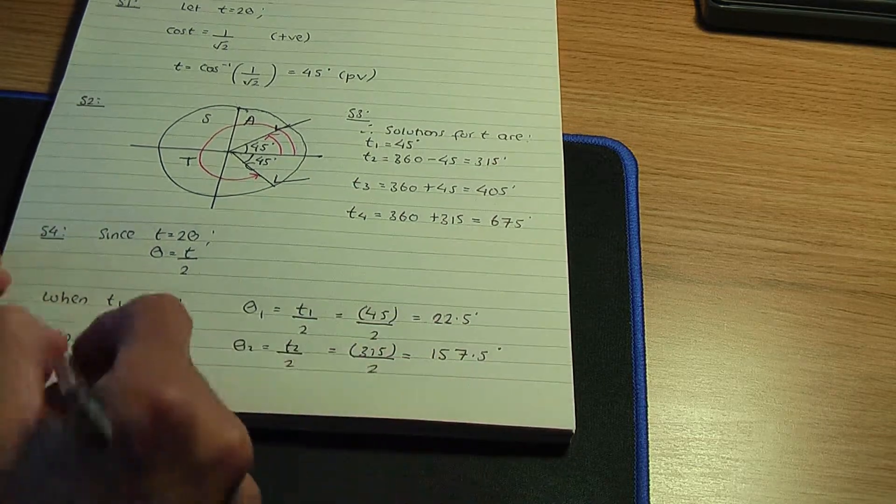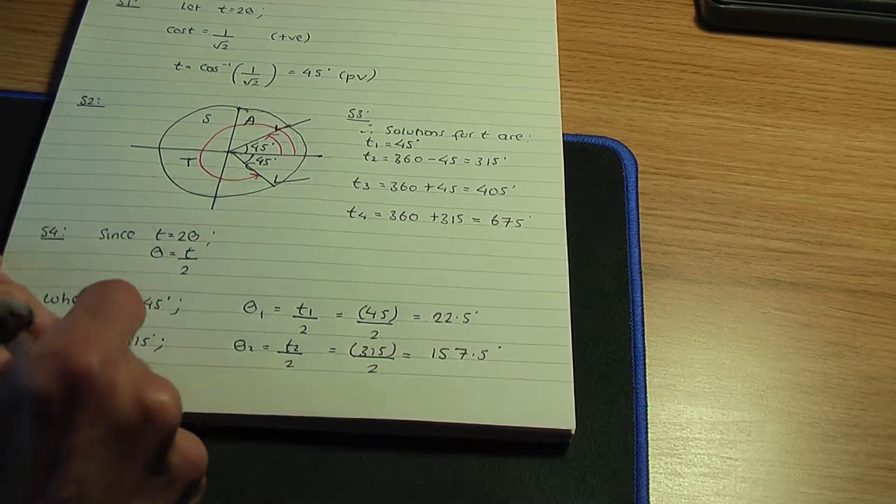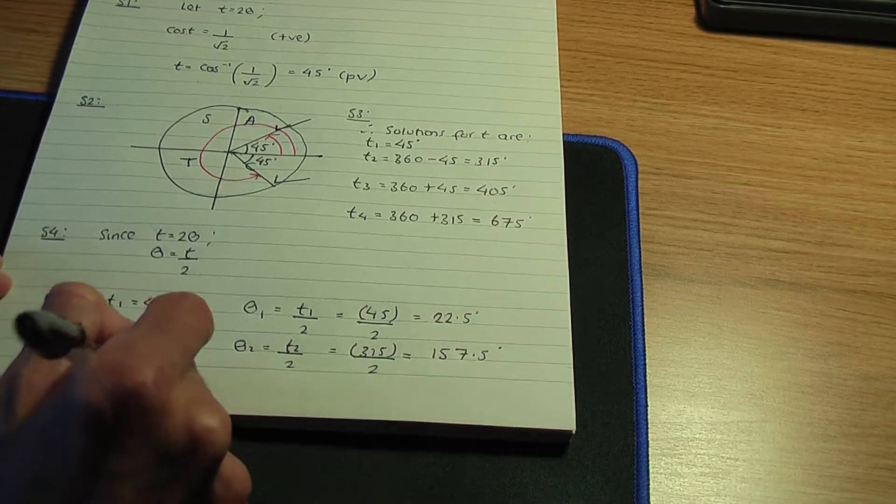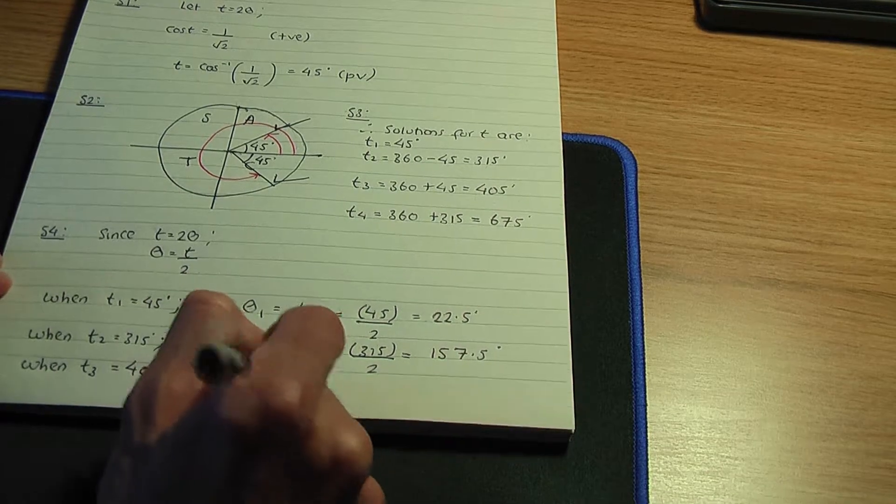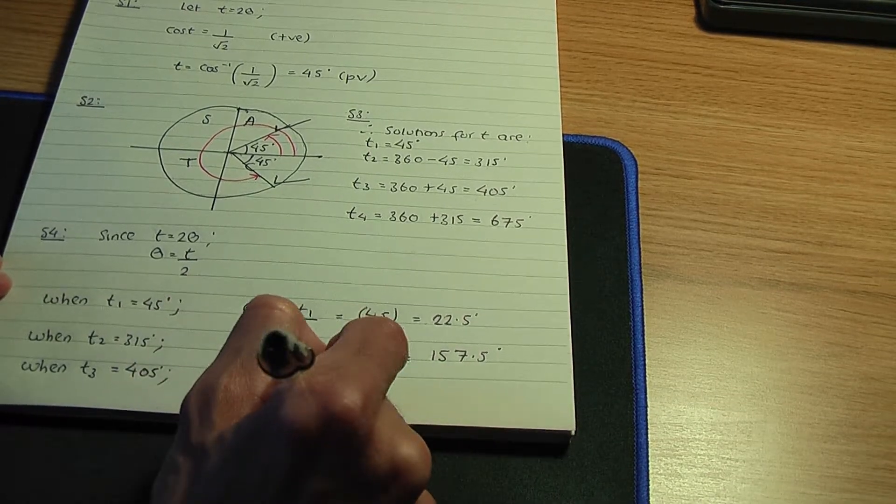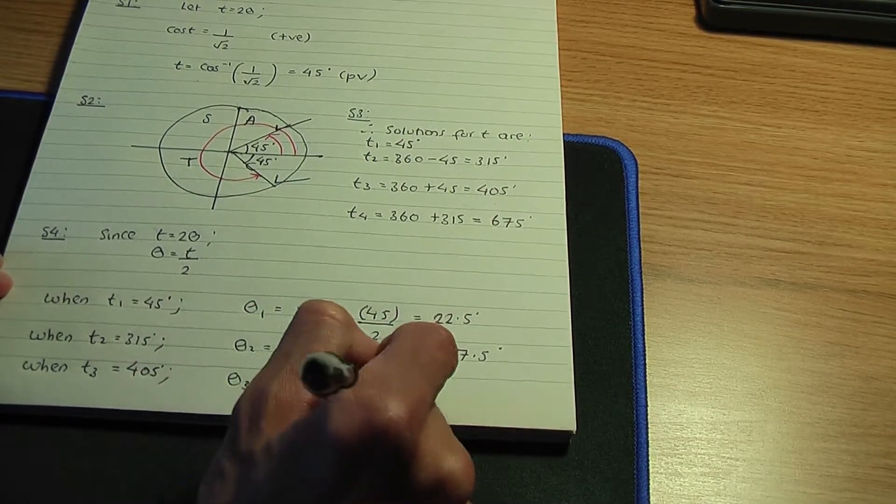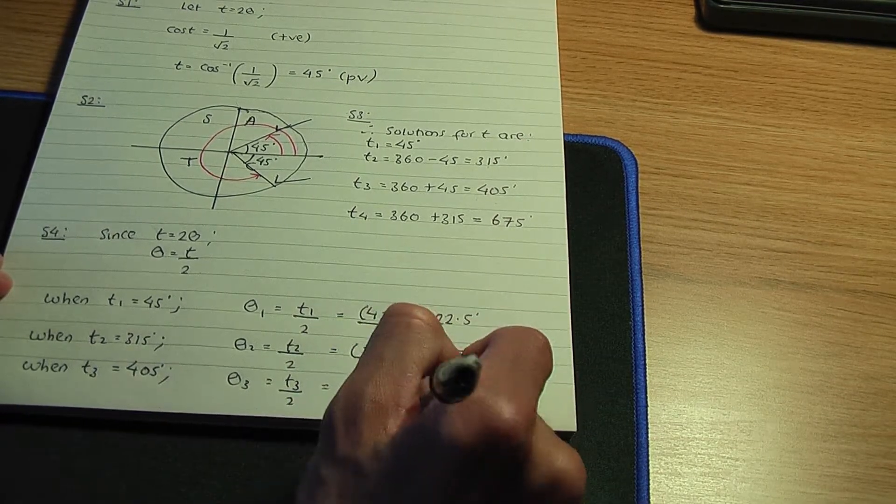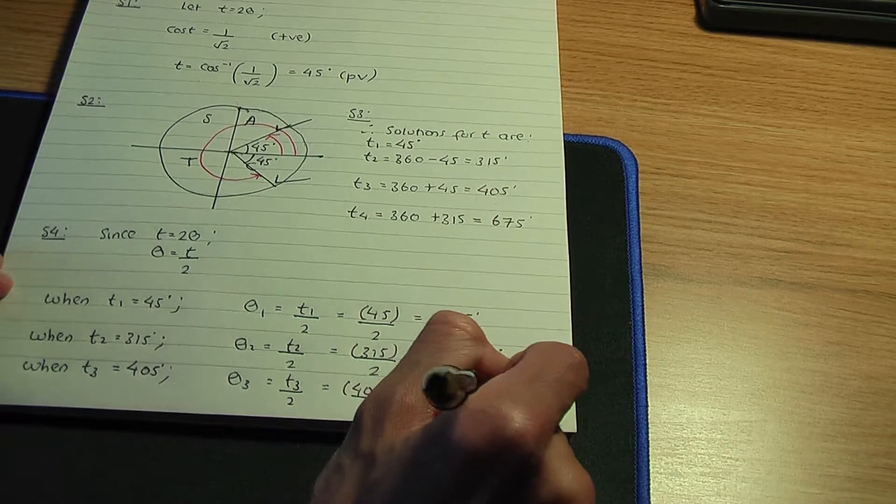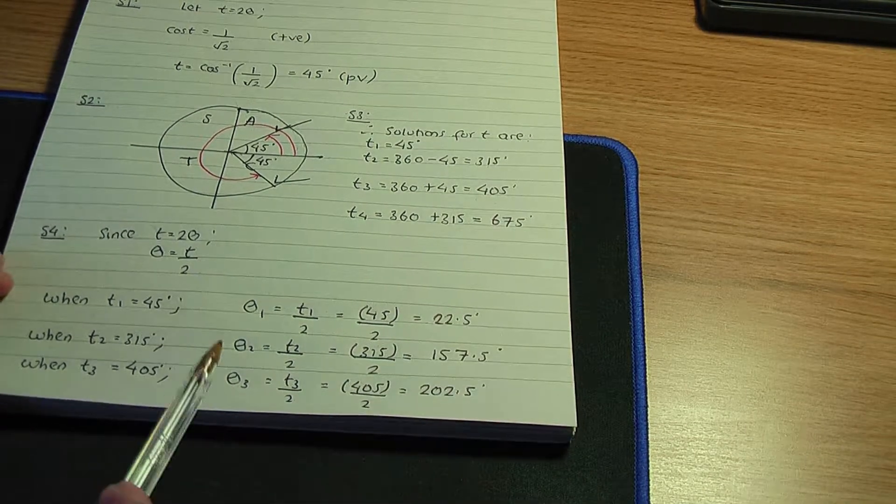Let's continue. When t3 is 405 degrees, θ3 is t3/2, so it's 405/2, that amounts to 202.5 degrees.